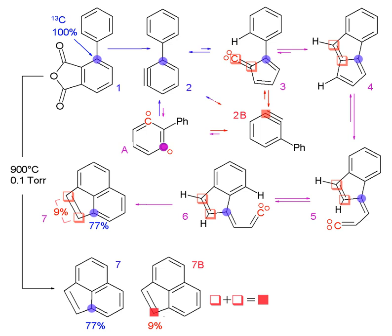Metabolic flux analysis using stable isotope labeling is an important tool for explaining the flux of certain elements through the metabolic pathways and reactions within a cell. An isotopic label is fed to the cell, then the cell is allowed to grow utilizing the labeled feed.